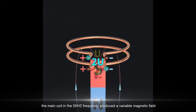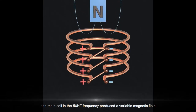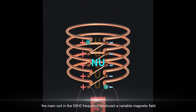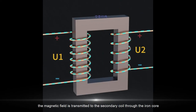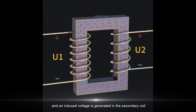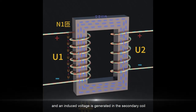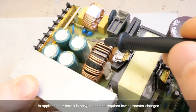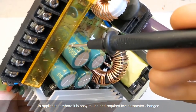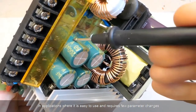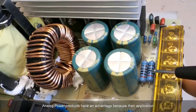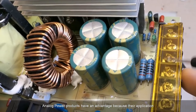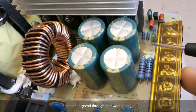In China, the main coil at 50Hz frequency produces a variable magnetic field. The magnetic field is transmitted to the secondary coil through the iron core, and an induced voltage is generated in the secondary coil, so the transformer realizes the voltage transformation. In applications where it is easy to use and requires few parameter changes, analog power products have an advantage because their application can be targeted through hardware curing.